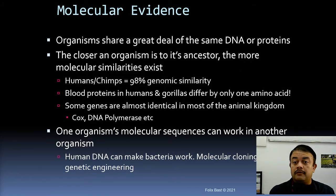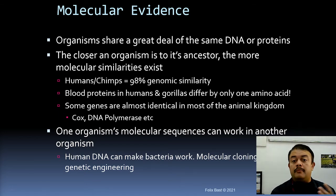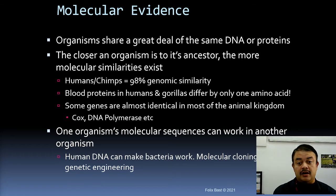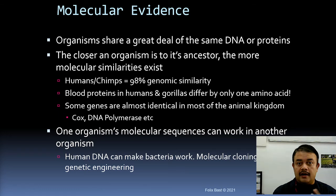Molecular evidence: organisms share DNA sequences to a great degree. For example, humans and chimpanzees share around 97–98% genomic similarity. The closer the organism is to its ancestor, the more molecular similarities exist. Blood proteins in humans and gorillas differ by only one amino acid, even though gorillas are not the closest relative — after chimpanzees come gorillas, then orangutans, then gibbons.